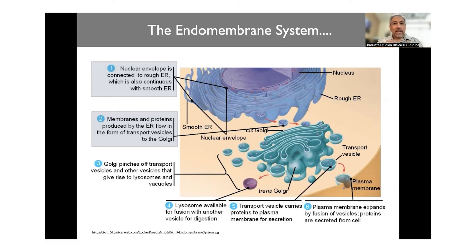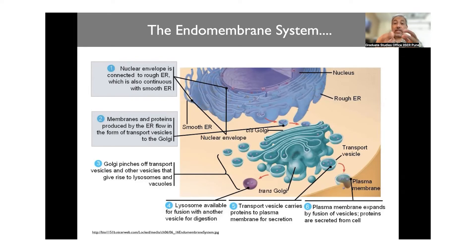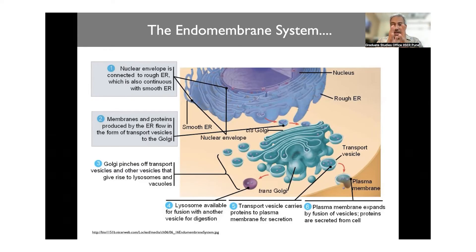There has to be a way to tie these membranes and keep them together. Studies — including work done in our lab and by others — show that if you add something to break up the microtubules, the Golgi, which is a nicely packed structure, just breaks up and gets distributed throughout the cell. This essentially shows that all these packets of membrane being held together in one compact structure so they can communicate with each other is mediated by the cytoskeleton.